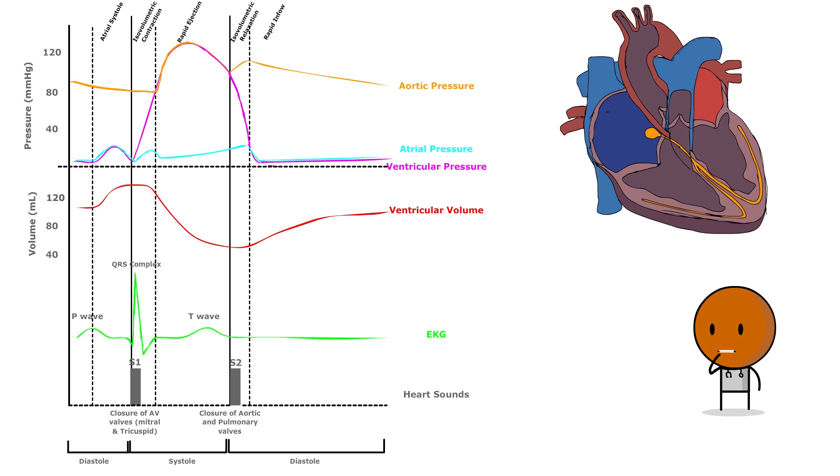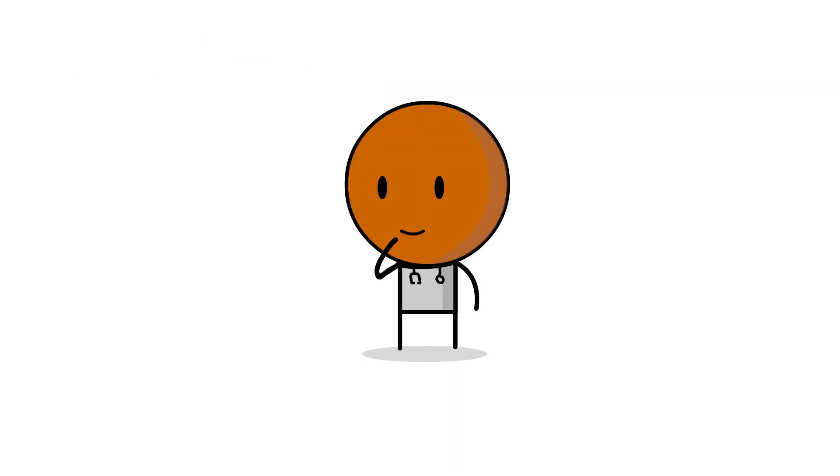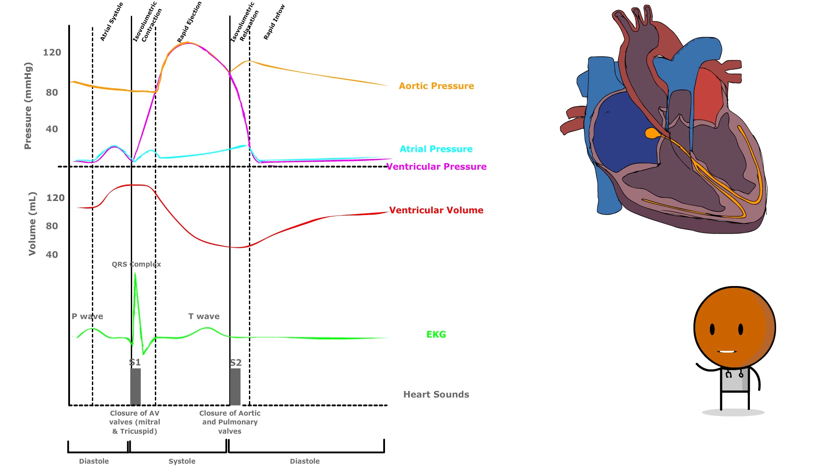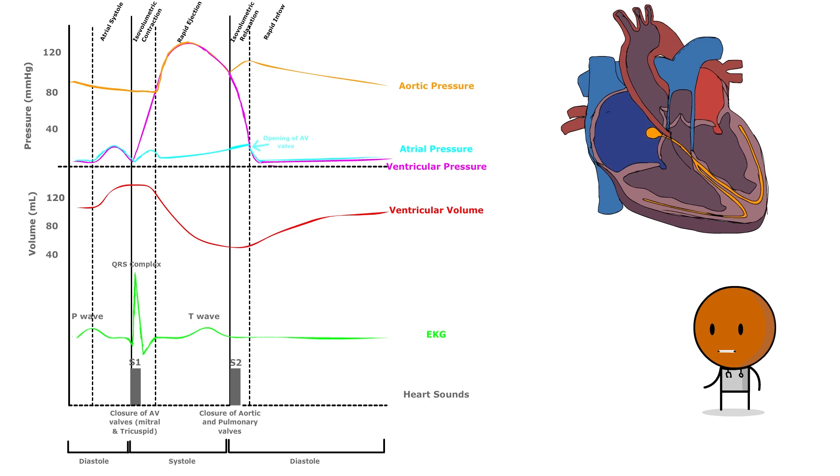Now, let's focus on atrial pressure curve. The atrial pressure curve experiences several distinct changes throughout the cardiac cycle. Number one, diastole, or the ventricular filling phase. Initially, as the ventricles relax and expand during diastole, the atrial pressure slightly rises due to continuous return of blood from the veins. This causes the AV valve to open, allowing blood to passively flow from the atria to the ventricles.